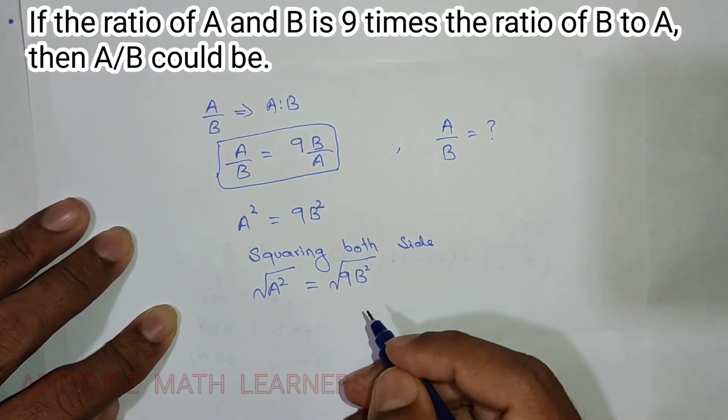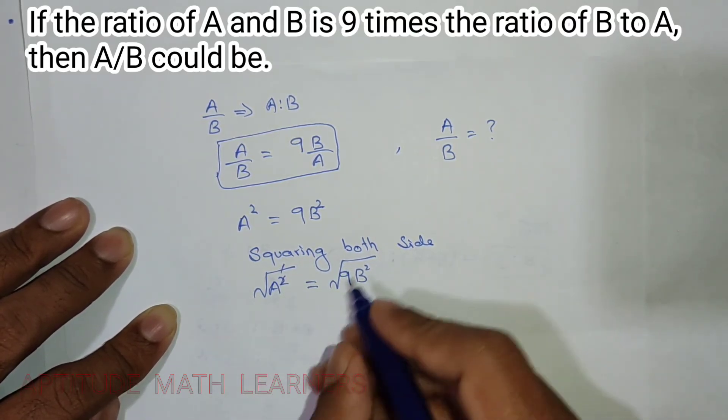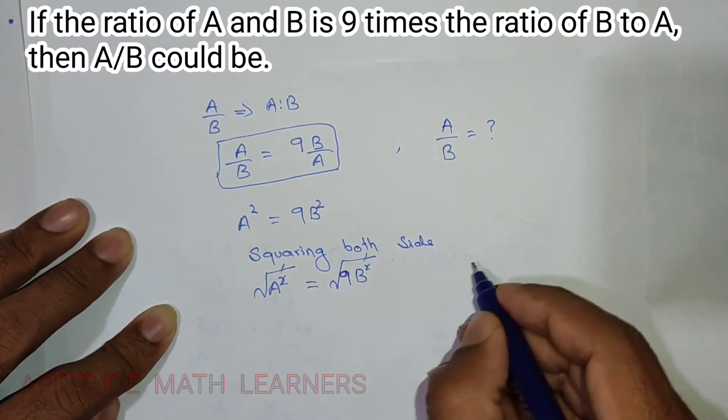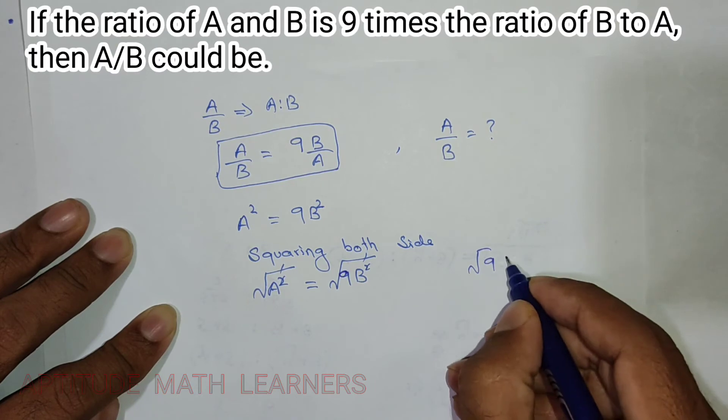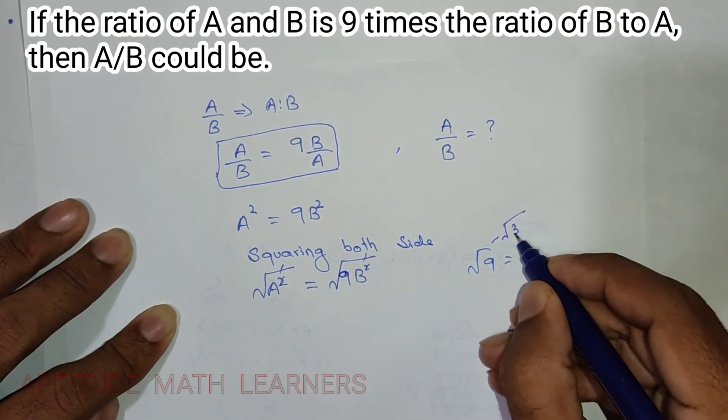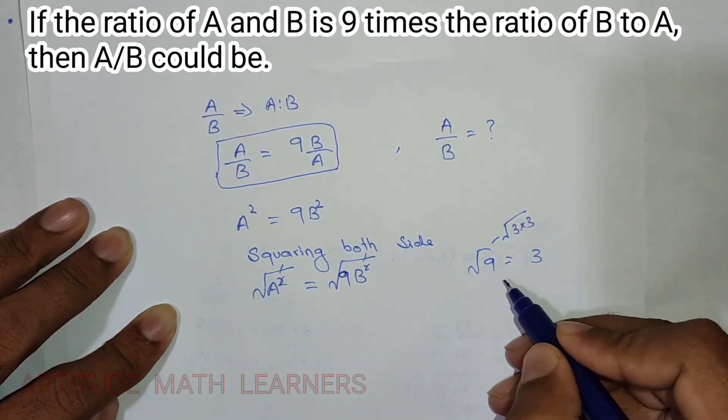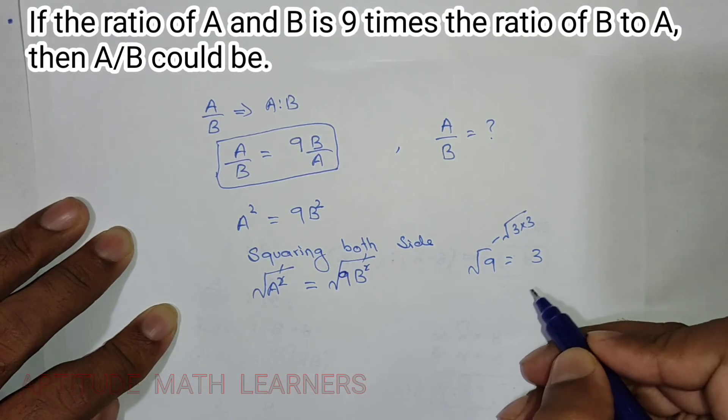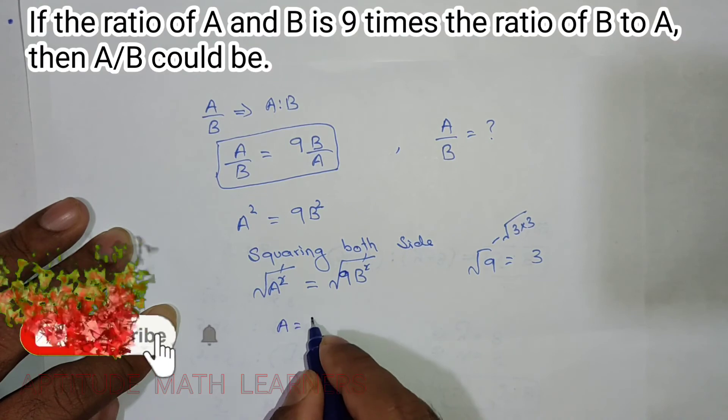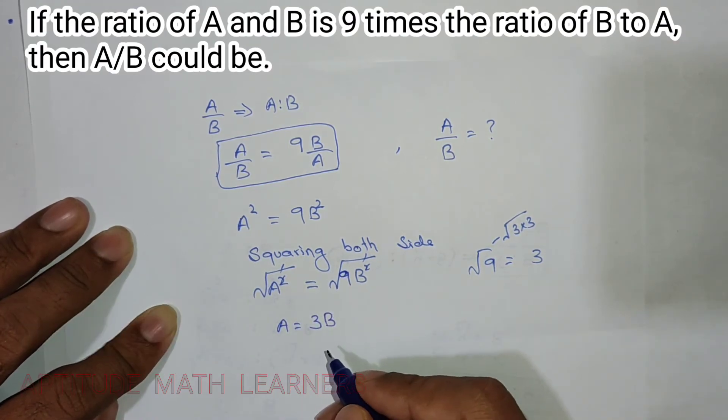The square root cancels with square on both sides. The square root of 9 is 3, since 3 multiplied by 3 becomes 9. So we get A is equal to 3B.